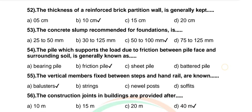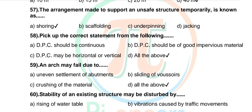Question 56: Construction joints in buildings are provided after — options: 10 m, 15 m, 20 m, 40 m. Correct answer: 40 m. Question 57: The arrangement made to support an unsafe structure temporarily is known as — options: shoring, scaffolding, underpinning, retaining, jacking. Correct answer: shoring.